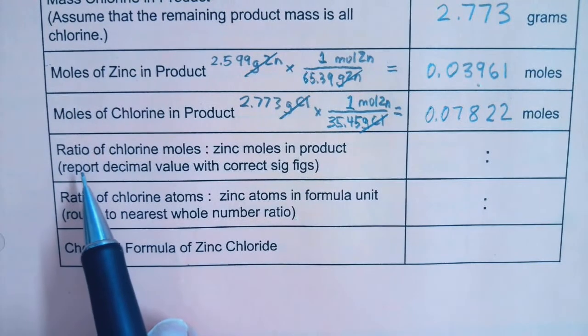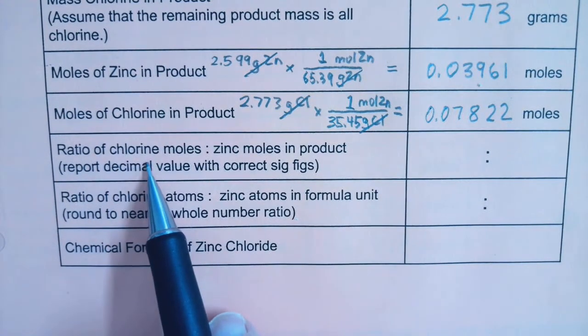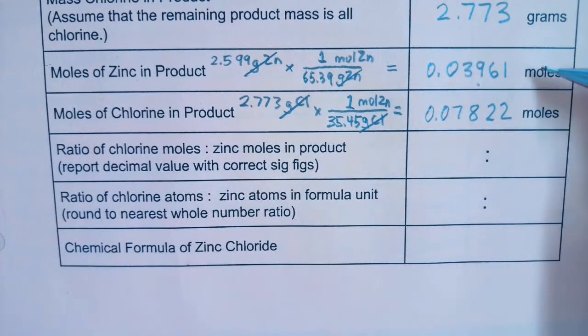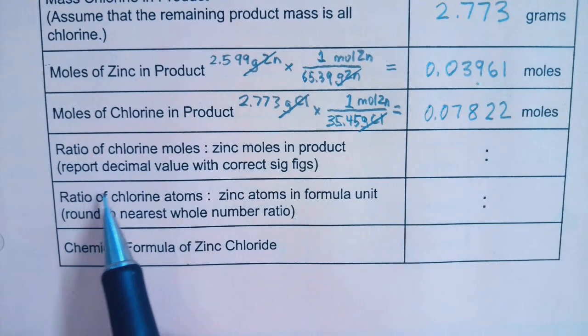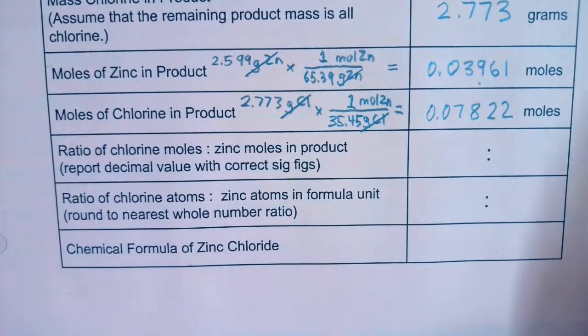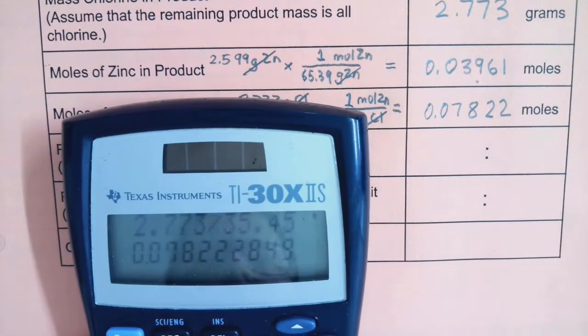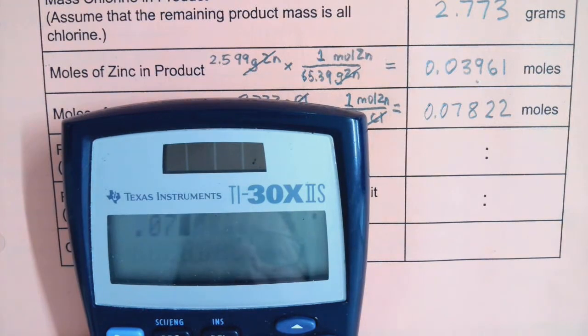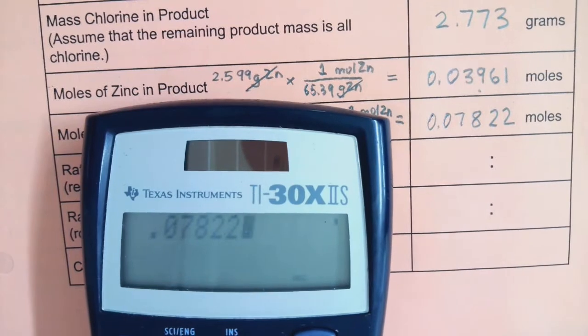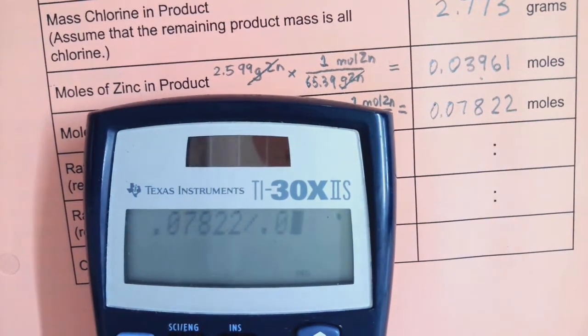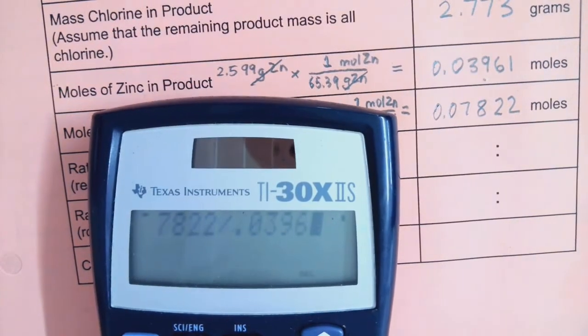So, next line says, what is the ratio of chlorine moles, that's the larger amount, to zinc moles, that's the smaller amount. It says, report decimal value with correct sig figs. So what I really want to do is take the bigger number, the 0.07822 number, and divide by 0.03961.